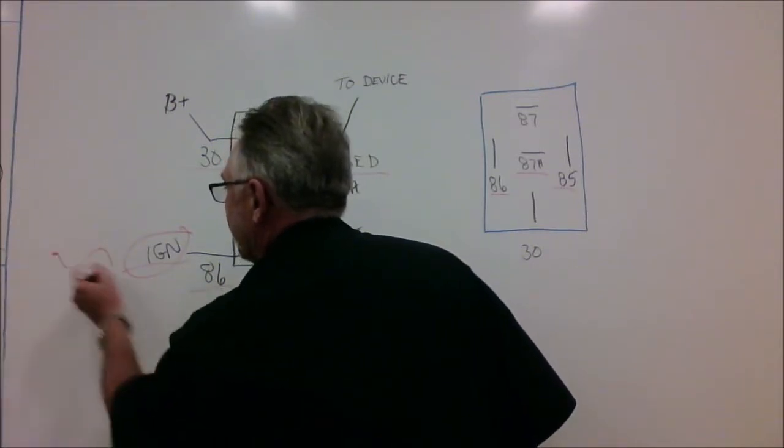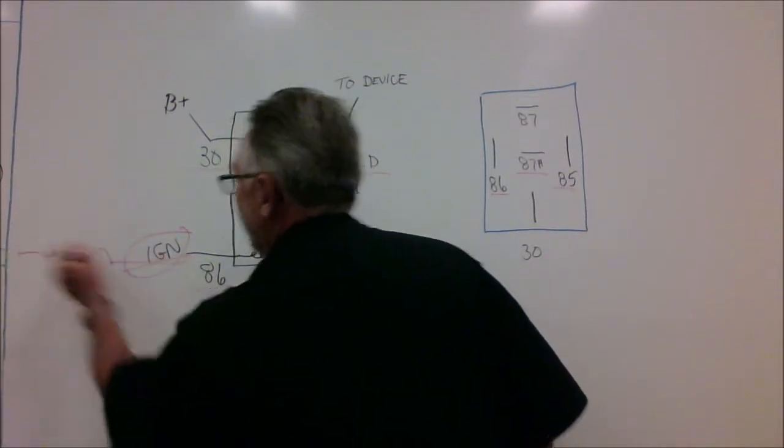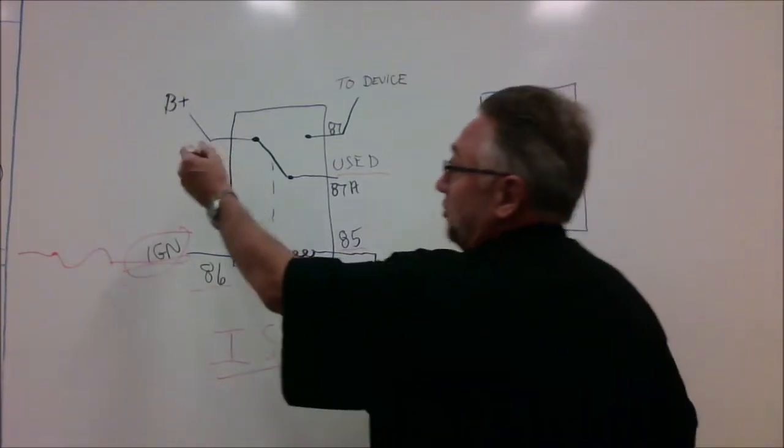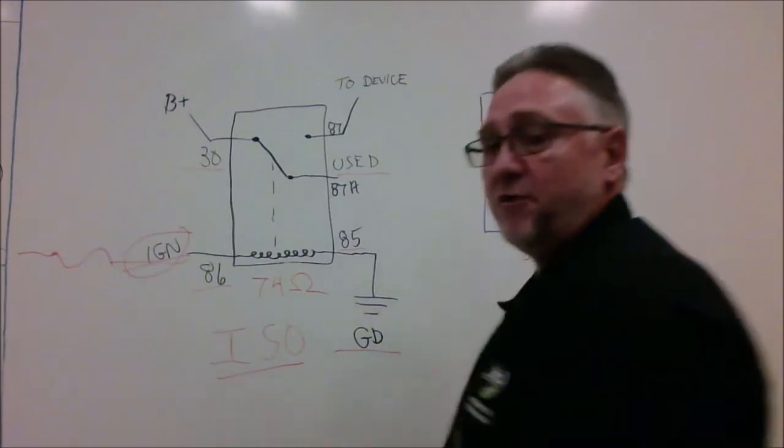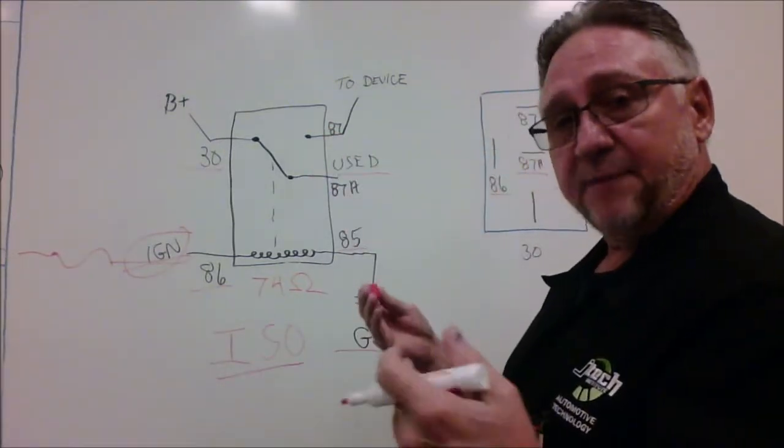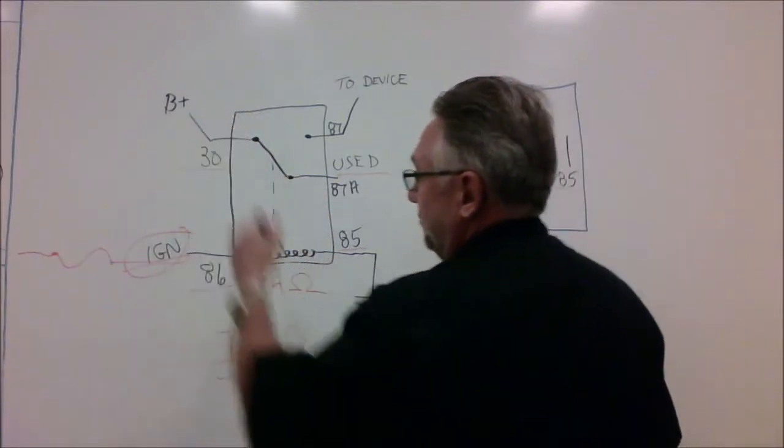Because if you have a... and same with 30, 30 would also have a fuse in line with it for whatever amperage it pulls. Okay, when you activate, and this relay is activated, it actually swings up and connects...